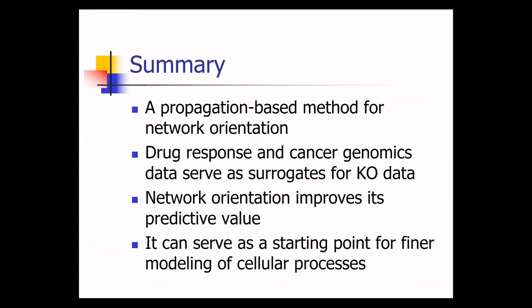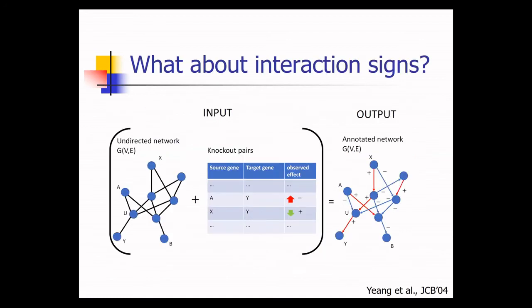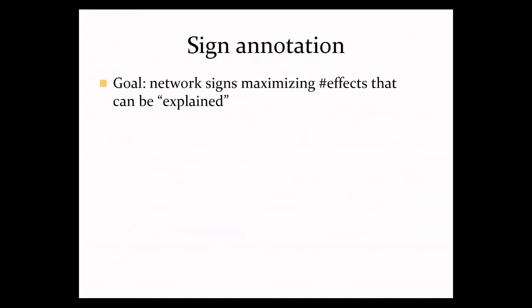So how can we go beyond orientation to functional modeling? So one idea appeared by Yeang and Jaakkola in 2004, where they suggested that knockout data can be used beyond orientation also to predict signs of repression or activation of edges. So the idea was that the net effect of a path is the product of the signs along its edges. So for example, the net effect of a path from A to Y would be minus, while the net effect of a path from X to B would be a plus, would be activation. So this again gives rise to a combinatorial problem that we are almost familiar with. Can one predict the signs in the network in a way that will maximize the number of effects that can be explained.